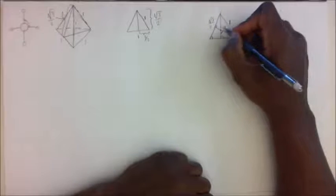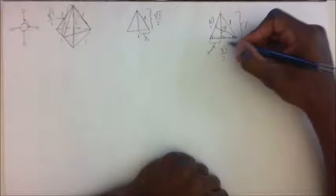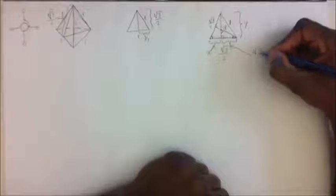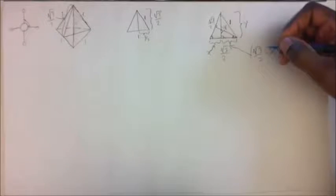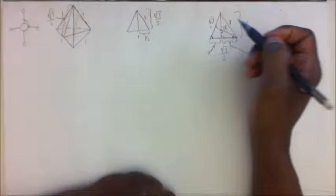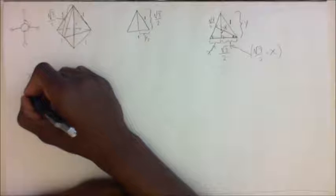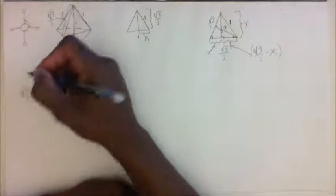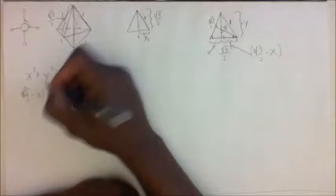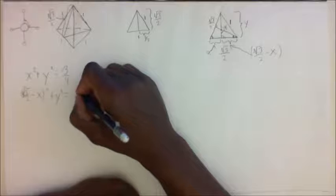This angle is 180 minus the angle which we're looking for. With that in mind, let's consider the height to be y and the side x. This side here is the square root of three over two minus x. So we can say x squared plus y squared is equal to the square root of three over two, squared, which we know is three quarters. We can also say: the square root of three over two minus x, quantity squared, plus y squared is equal to one.